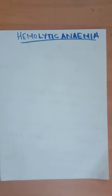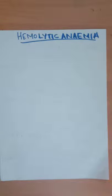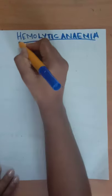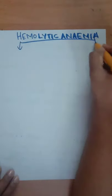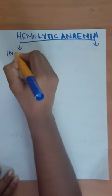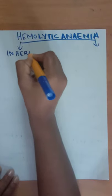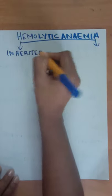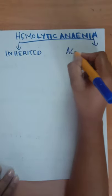Now let's study about hemolytic anemia. Hemolytic anemia occurs when red blood cell destruction is increased as the result of an acquired or inherited condition which generally interferes with normal red blood cell survival. The causes can be inherited or acquired.